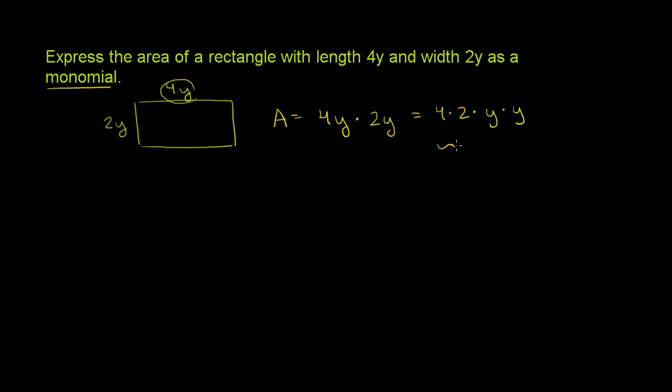And of course, 4 times 2, that part right over there, is just equal to 8. And then y times y, well, that's just y squared, or it's y to the first times y to the first, which is also y squared. So it becomes 8y squared.